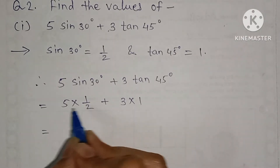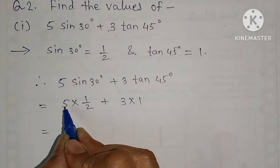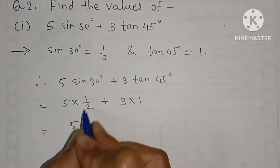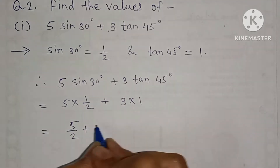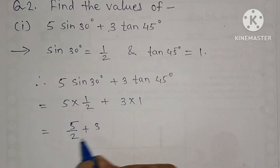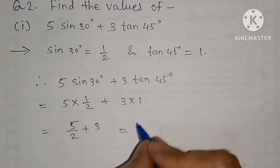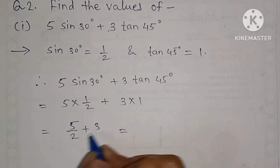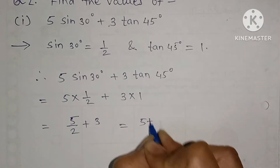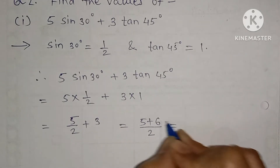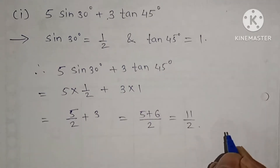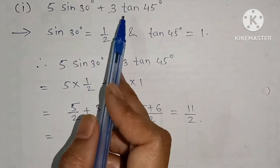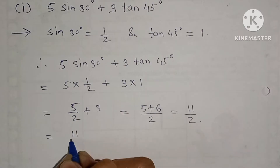5 into 1 upon 2 gives 5 upon 2, plus 3 into 1 gives 3. So we have 5 upon 2 plus 3. Converting 3 to sixths: 5 plus 6 upon 2 equals 11 upon 2. Therefore the value of 5 sin 30 plus 3 tan 45 is 11 upon 2.